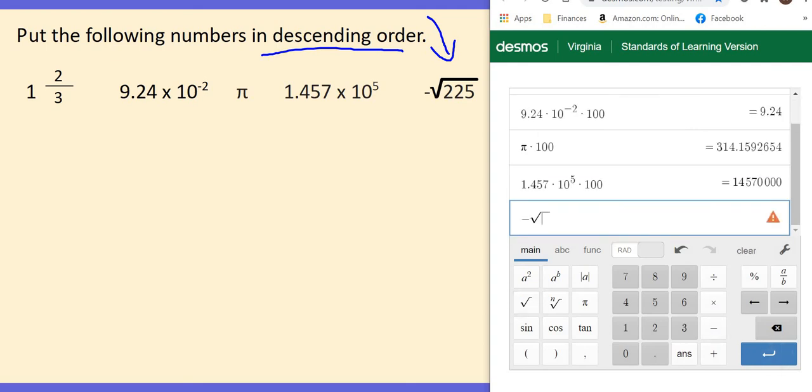And then you have 1.457 times 10 to the fifth power. Remember, if you need practice on putting any of these in the calculator, just ask us. We're glad to help. That's a huge number there, a huge percentage. And then we have a negative. Always remember when you're talking about a negative, those negatives are going to be the smallest. So negative square root of 225. And of course, I've got to make the cursor come out from under the square root. Multiply by 100.